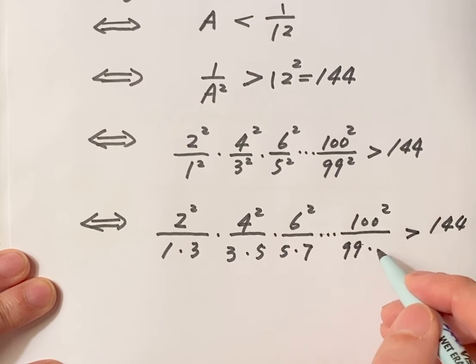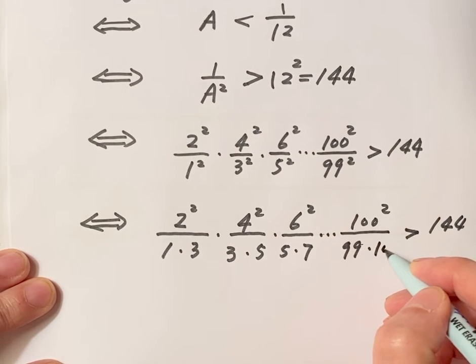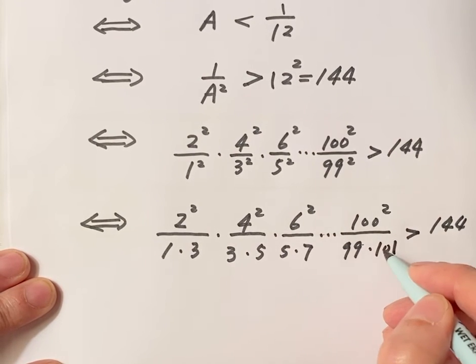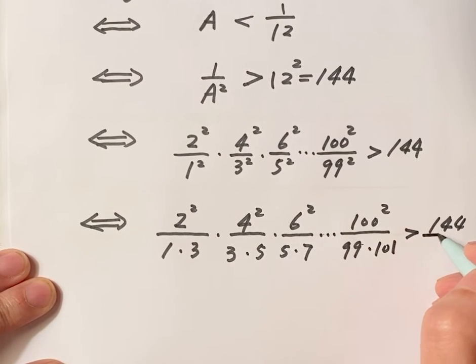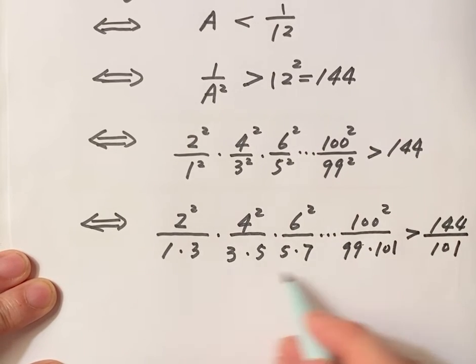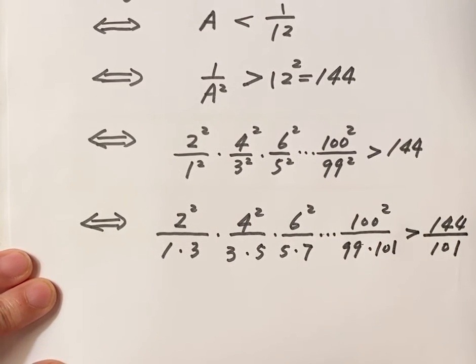So here, one number we need here. That's 101. Originally, we don't have. That means left-hand side divided by this number. The right-hand side also needs to divide by 101. So we need to prove this inequality if it is true.